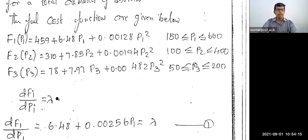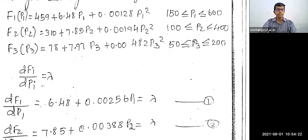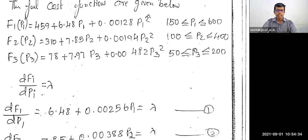The general formulation is DFi/DPi = λ. First, we differentiate fuel cost function F1 with respect to P1. Differentiating, the constant term becomes zero, and the squared term gives 2 × 0.00128 = 0.00256. So: DF1/DP1 = 6.48 + 0.00256·P1 = λ. Take this as equation number 1.